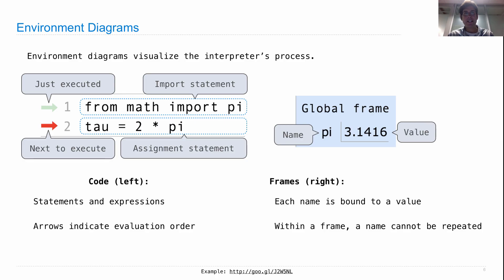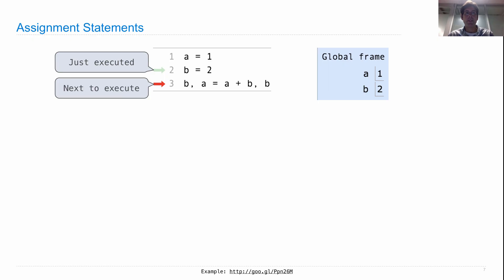So that's what an environment diagram looks like. Now we can talk about exactly what assignment statements do. They change the bindings between names and values in frames. Here is an environment diagram for three lines of code. Just executed was b equals 2. Next to execute is this larger assignment statement that has two names on the left and two expressions on the right.